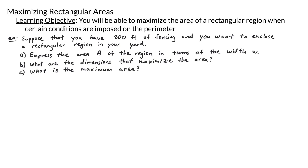In our example here we have 200 feet of fencing and we want to enclose a rectangular region in our yard. Because we're working with a rectangular region, let's draw ourselves a little rectangle here. In part A of our problem we want to express the area of our region in terms of the width.